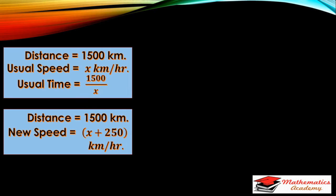On the left screen you will see: distance = 1500 km, usual speed = X km per hour, and usual time = 1500 upon X, which is the time taken when travelling at the usual speed.